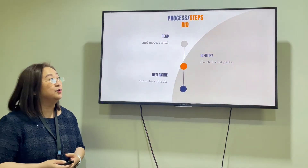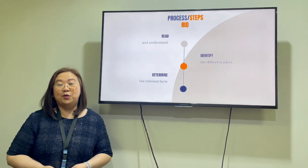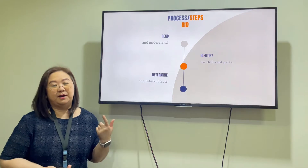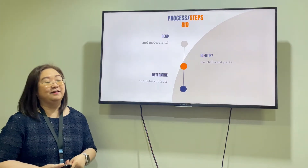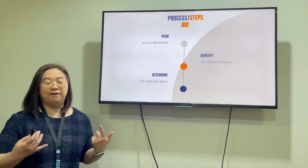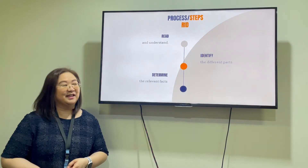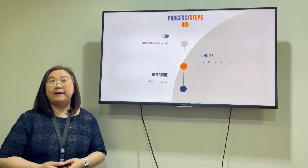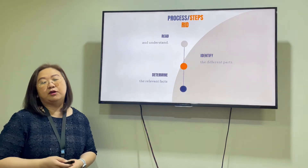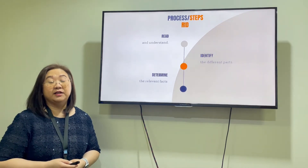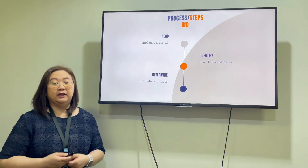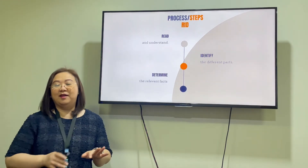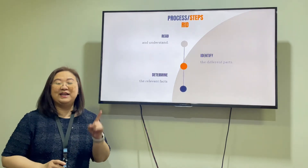Here are some steps which I summarized that maybe you can adopt — I call it the R-I-D-S-A-E. Let's start with RID. R is for Read — read the case in its full text, and not just read, but study and understand it. I is for Identify — identify the different parts of the case. If you need a detailed discussion on the different parts of a case, you can refer to Velarde versus Social Justice Society, where it was discussed in detail. D is for Determine — determine the relevant facts; separate the irrelevant from the relevant, because you only need the relevant facts.